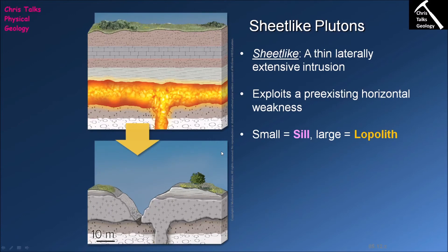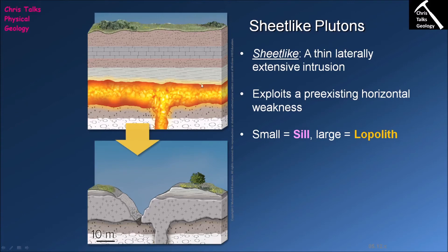The next type of intrusion is the sheet-like pluton. In this case, magma rising through the crust reaches a point where it achieves a similar density to the surrounding crust, so it can't rise any further. Instead, the magma starts spreading laterally, resulting in an intrusion that is laterally extensive but rather thin — a sheet-like shape. These sheet-like plutons typically exploit a pre-existing horizontal weakness, such as a bedding plane between two rock layers. Here we can see an intrusion exploiting the contact between two distinct rock units.